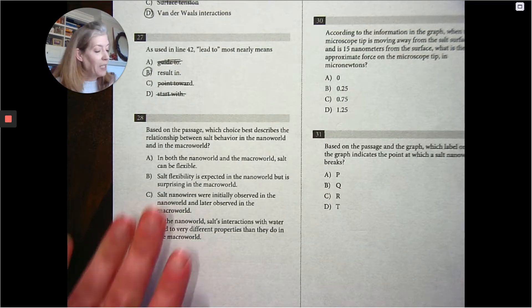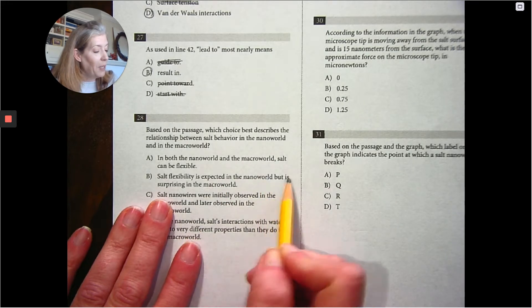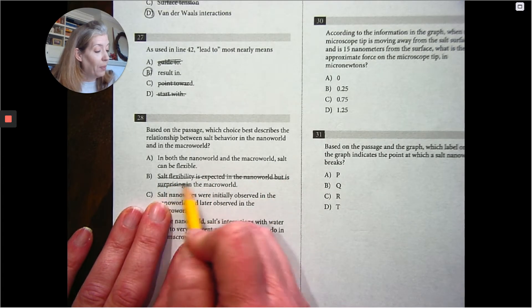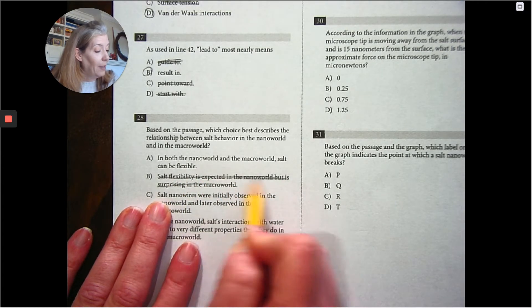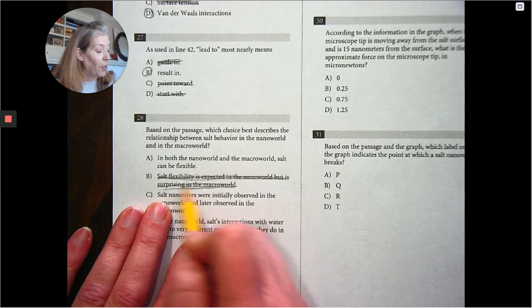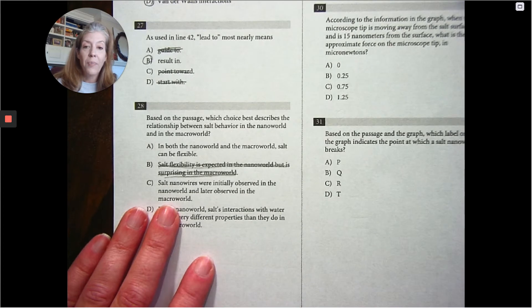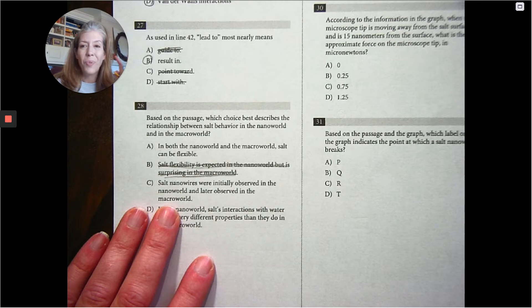B. Salt flexibility is expected in the nano world but is surprising in the macro world. Salt nanowires were initially observed in the nano world and later observed in the macro world. We didn't have any times. We didn't have any dates on which one was found first.